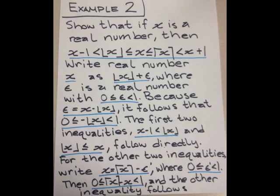On to example number two: we are trying to show that if x is a real number, then x minus 1 is less than the floor of x, which is less than or equal to x, which is less than or equal to the ceiling of x, which is less than x plus 1.